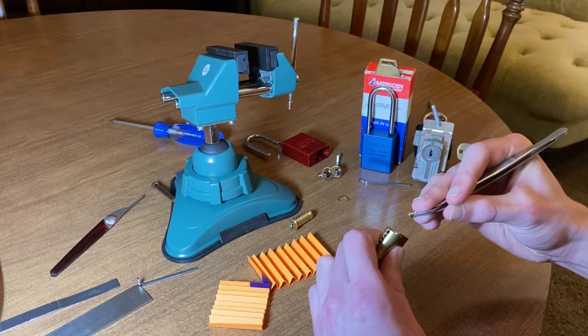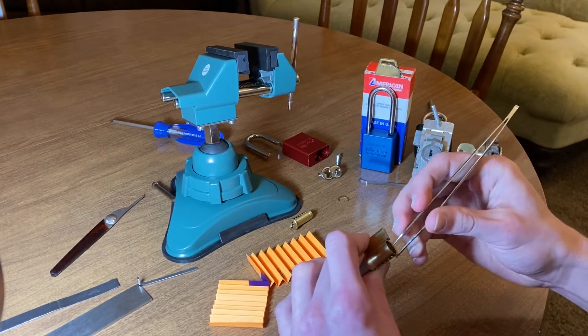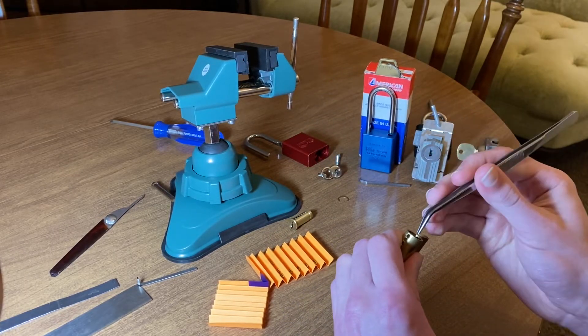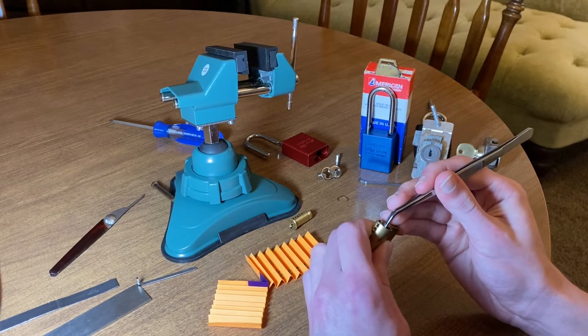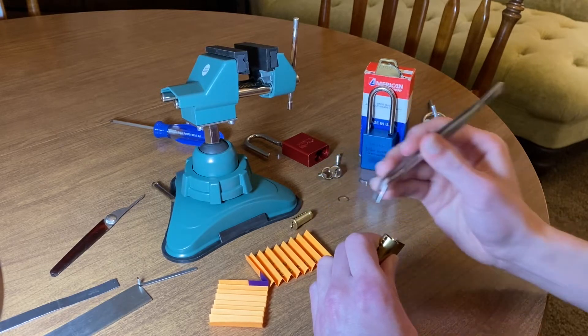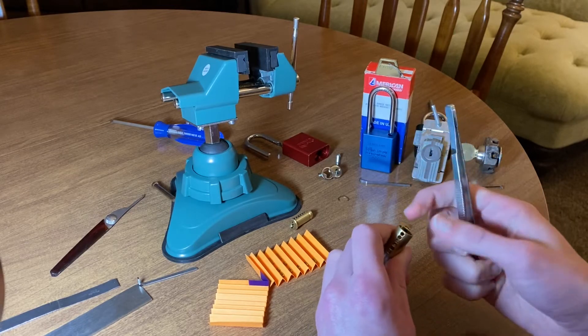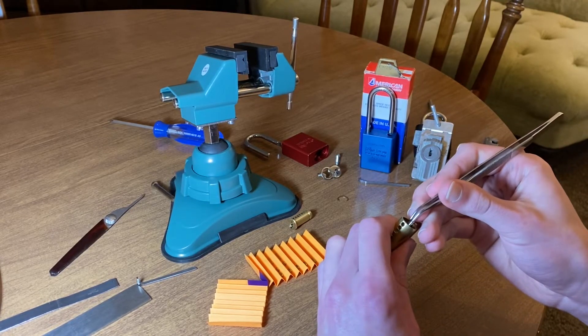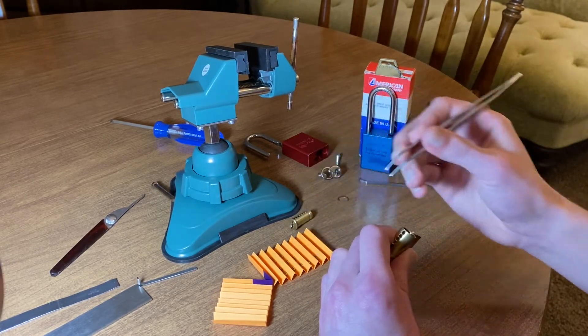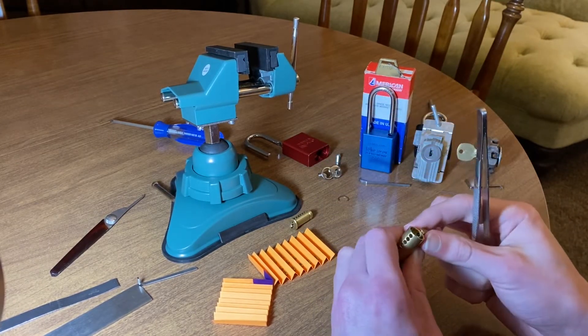Number one has a spool. There's the spring. Number two is also a spool. There's spring number two. Number three is a third spool. And the spring follows.